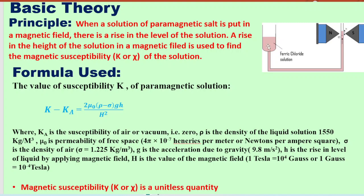Ferric chloride is a paramagnetic solution used in Quincke's tube. It is a U-shaped tube where one side is thin and the other side is wider. There is a change in the level of this solution when it is placed in the magnetic field, and using the change in height (small h), we can find the susceptibility k using the formula: k minus k_a equals 2μ₀(ρ − σ)gh / H².